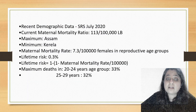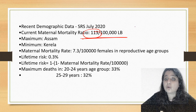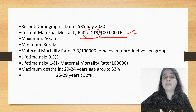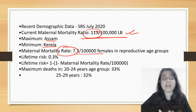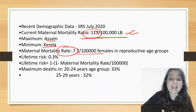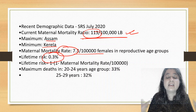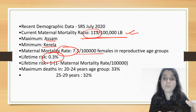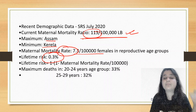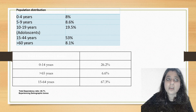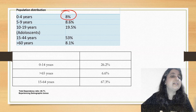The current maternal mortality ratio is 113 per 1 lakh live births — this is the latest and very important figure. The state with maximum MMR is Assam and minimum is Kerala. The maternal mortality rate is 7.3 per 1 lakh females in the reproductive age group. Lifetime risk of maternal mortality is 0.3%. The ratio refers to deaths per 1 lakh live births; the rate refers to deaths per 1 lakh women in the reproductive age group.